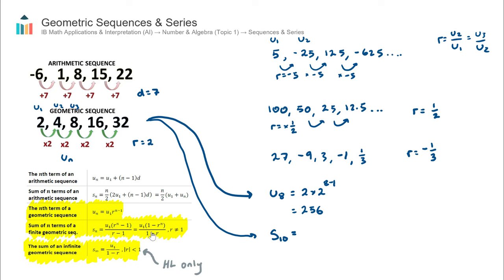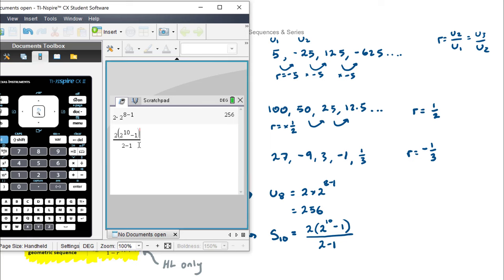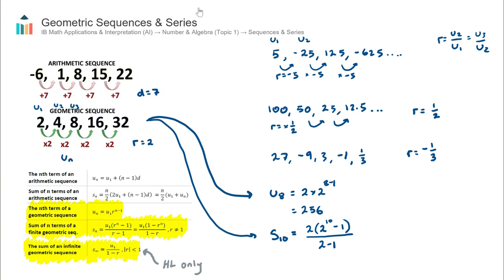Using the left-hand formula: Sn equals U1 multiplied by (r to the power of n minus 1), all divided by (r minus 1). Here, U1 is 2, r is 2, and n is 10 — the sum of the first 10 terms. So that's 2 multiplied by (2 to the power of 10 minus 1), divided by (2 minus 1). Entering that into a calculator gives 2,046. So the sum of the first 10 terms of this sequence is 2,046.